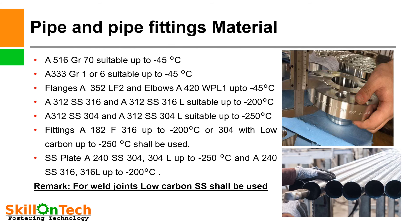A312 SS316 and A312 SS316L are suitable up to –200°C, so pipe and pipe fittings can be made of SS316L or SS304L. A312 SS304 and A312 SS304L are suitable up to –250°C. For fittings, A182 F316 or F304 with low carbon shall be used. SS plates A240 SS304, SS304L, A240 SS316, and SS316L can be used for plate material. For weld joints where welding is essential in pipes or fittings, low-carbon SS shall be used; otherwise, chromium carbide precipitation will occur and the material will lose its strength.